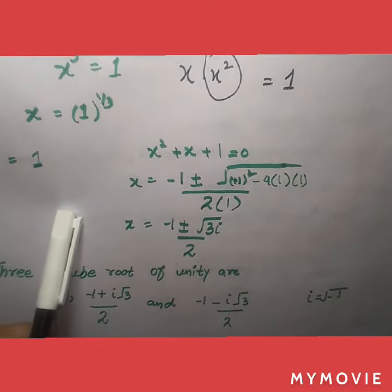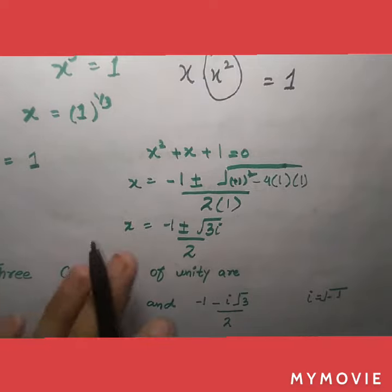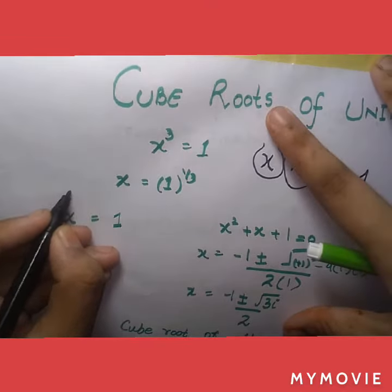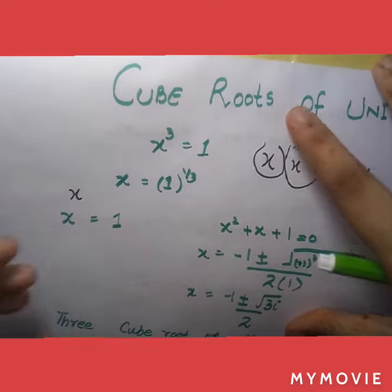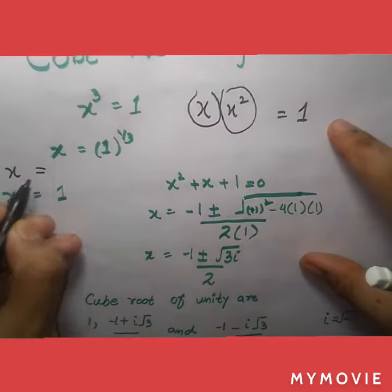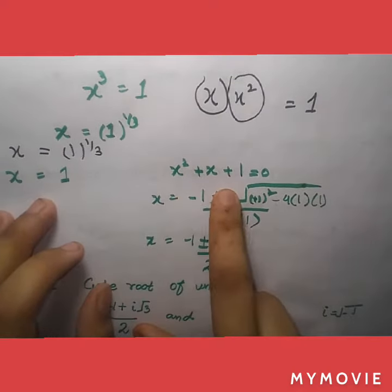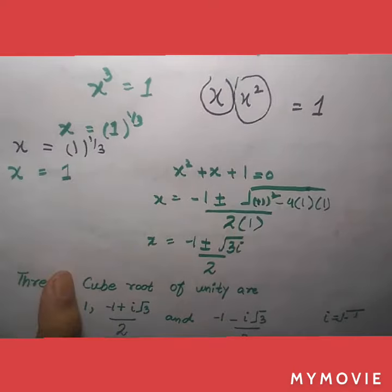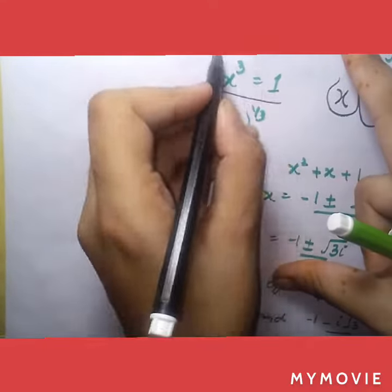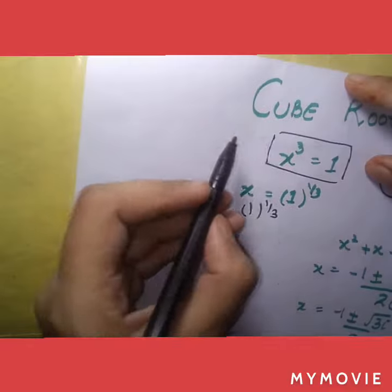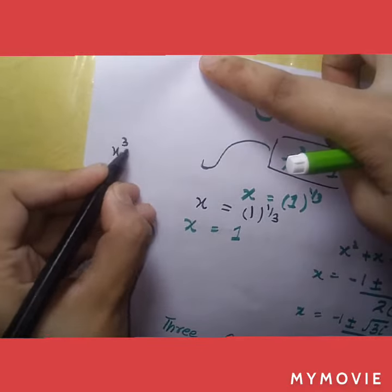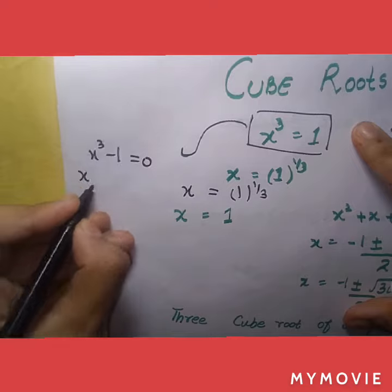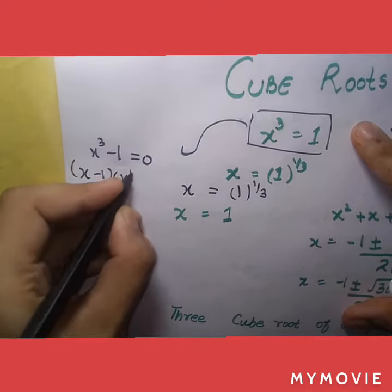x equals 1 is the cube root. This type of formula is x square plus x plus 1. That's why we can say that x cube minus 1 equals 0. This formula is generated by x minus 1 and x square plus x plus 1.